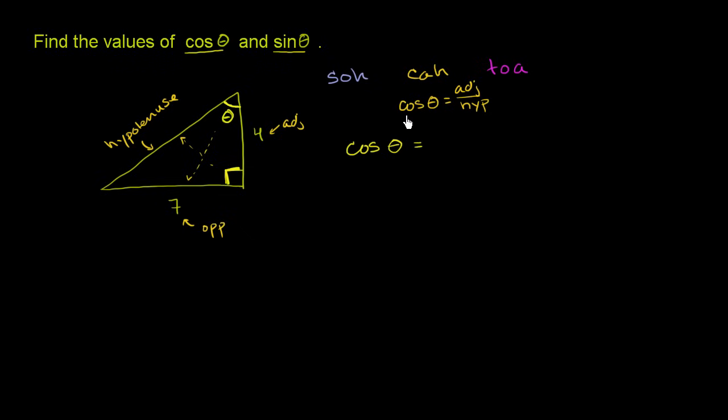So with that out of the way, we said cosine of theta is equal to adjacent over hypotenuse. Adjacent has length 4.